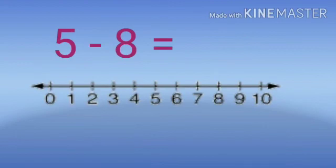Here, when we move towards left from the number 5, we have to take 8 steps. But, we can see, on the 5th step, 0 has come and there is nothing after that.